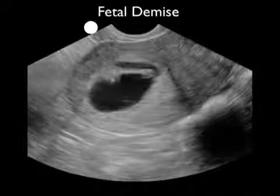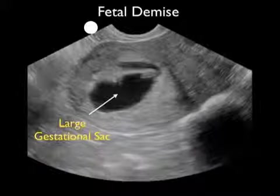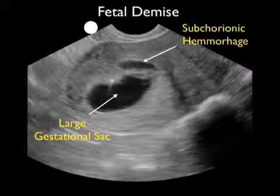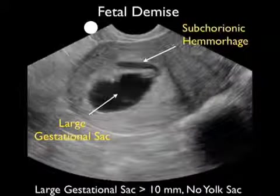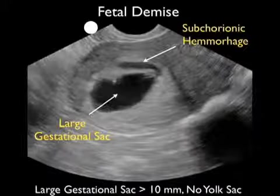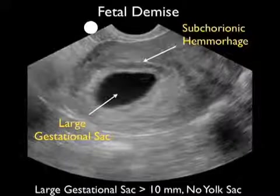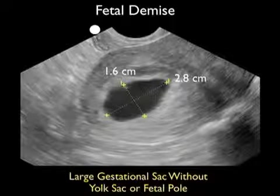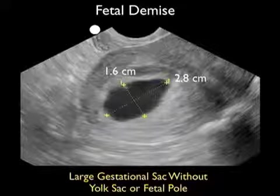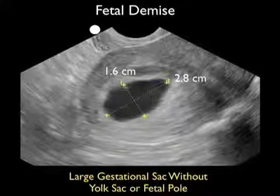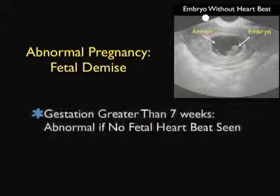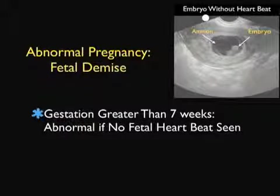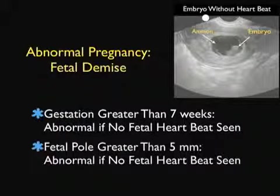Here's video from an abnormal pregnancy. The first thing we notice is a very large gestational sac without a yolk sac or discernible fetal pole with heartbeat. We also see the presence of subchorionic hemorrhage to the superior aspect of the gestational sac — that area of dark or anechoic fluid surrounding the gestational sac, commonly seen with abnormal pregnancies or spontaneous miscarriage. Placing calipers down to measure the diameter, it's very large at 2.8 centimeters by 1.6 centimeters — much larger than the 10-millimeter mark for no yolk sac or 18 millimeters if no fetal pole is seen. Other indicators include gestation greater than seven weeks with no fetal heartbeat, or a fetal pole greater than five millimeters without a heartbeat.